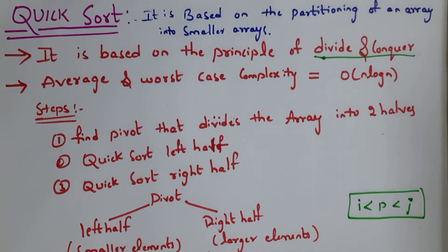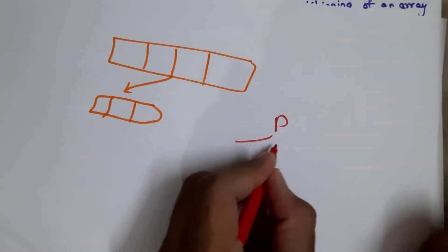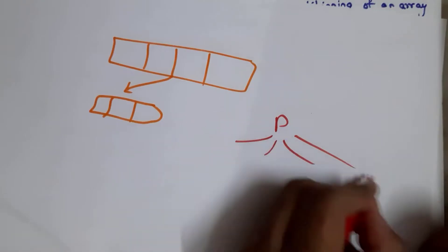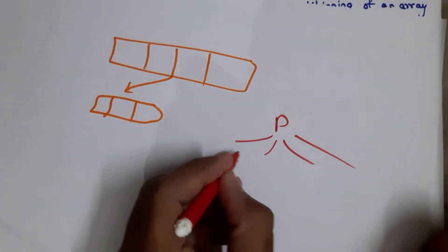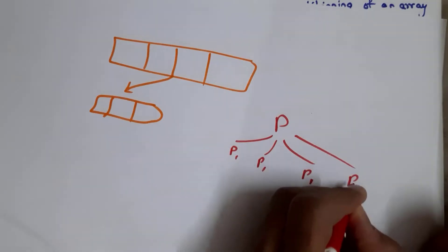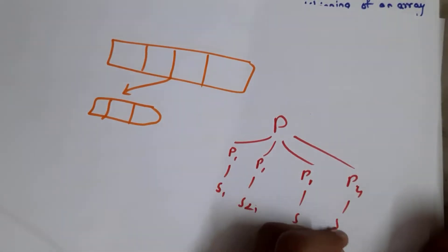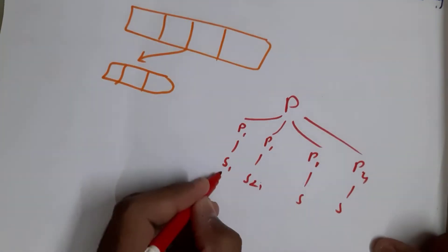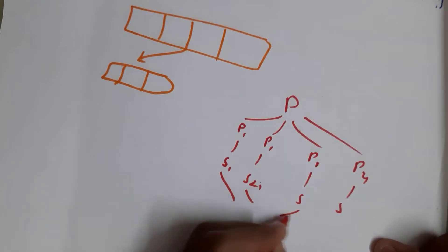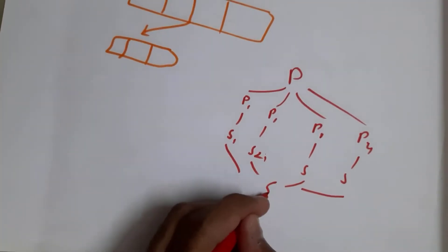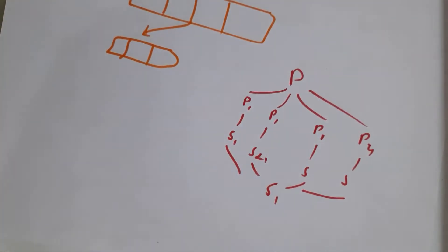In divide and conquer strategy, we will break a large problem into smaller sub-problems and we will find solutions to these sub-problems. And at last, we will combine all these solutions into a single solution. This is known as divide and conquer strategy.